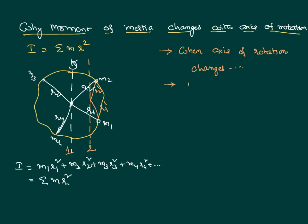Therefore, moment of inertia changes. Why does it change? Though mass of each particle is same, distance of each particle from axis of rotation changed. The axis of rotation is changed. As the distance changes, moment of inertia also changes.